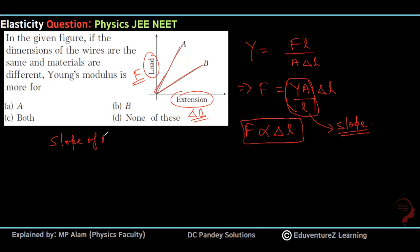Slope of A is YA by L. Force and extension are directly proportional, so the graph is a straight line.